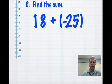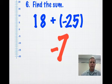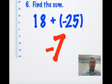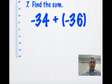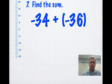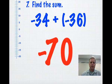Number 6: 18 plus negative 25. What do you have more of? You have more negatives. Since the signs are different, you can end up subtracting. 25 minus 18 gives you negative 7. Number 7: negative 34 plus negative 36. Would you go ahead and try this problem? Signs are the same, so you add them together. And you get negative 70.